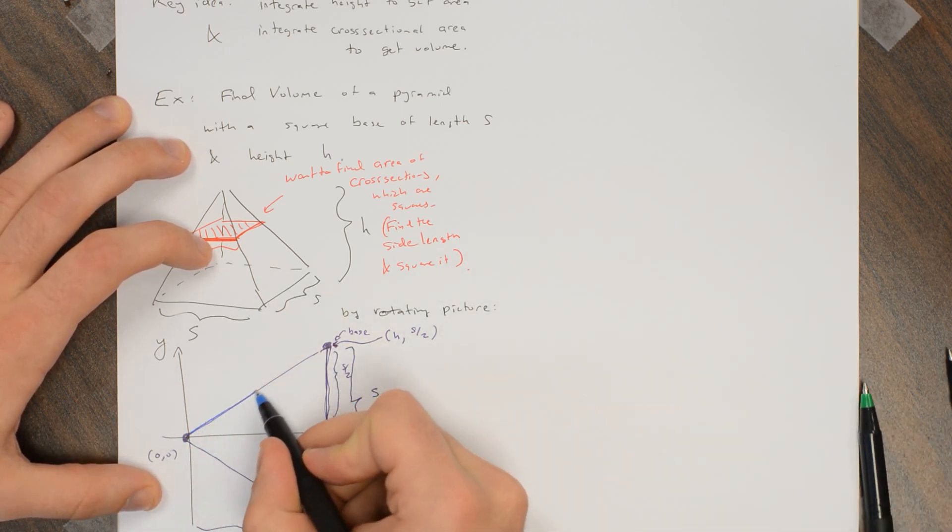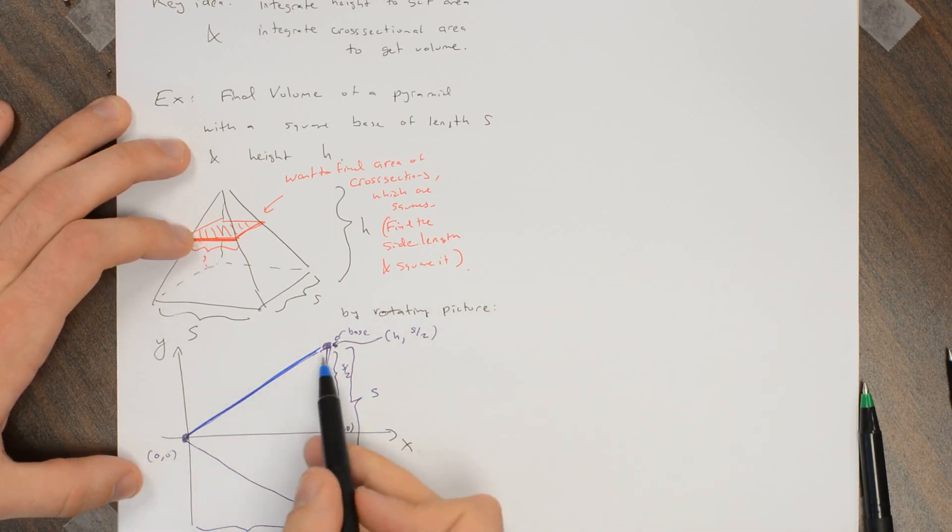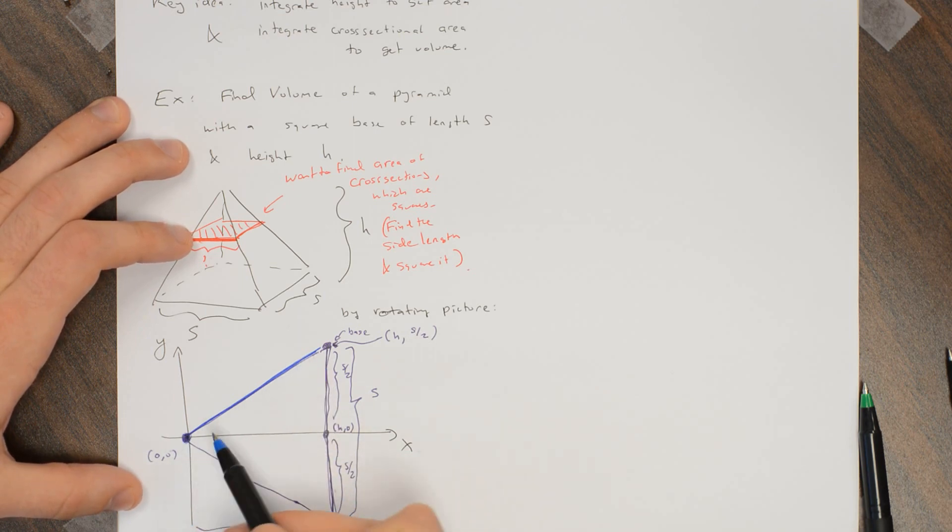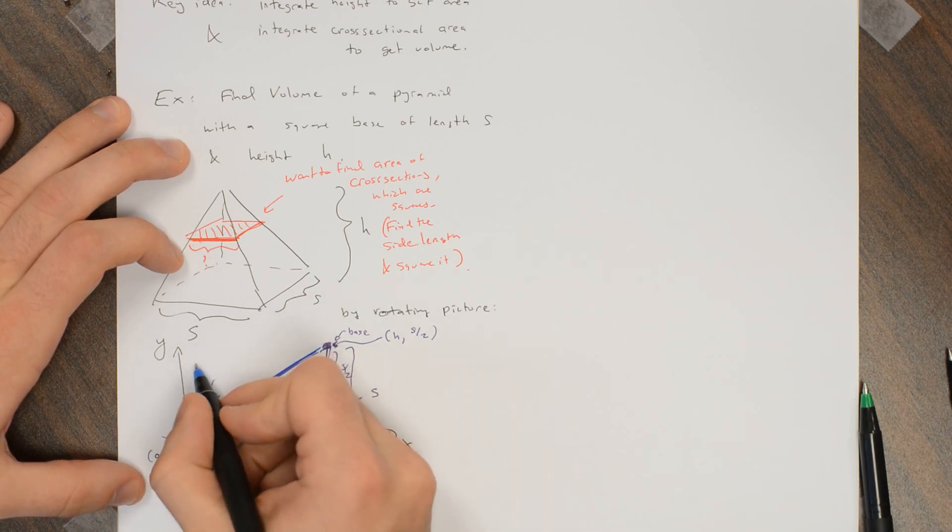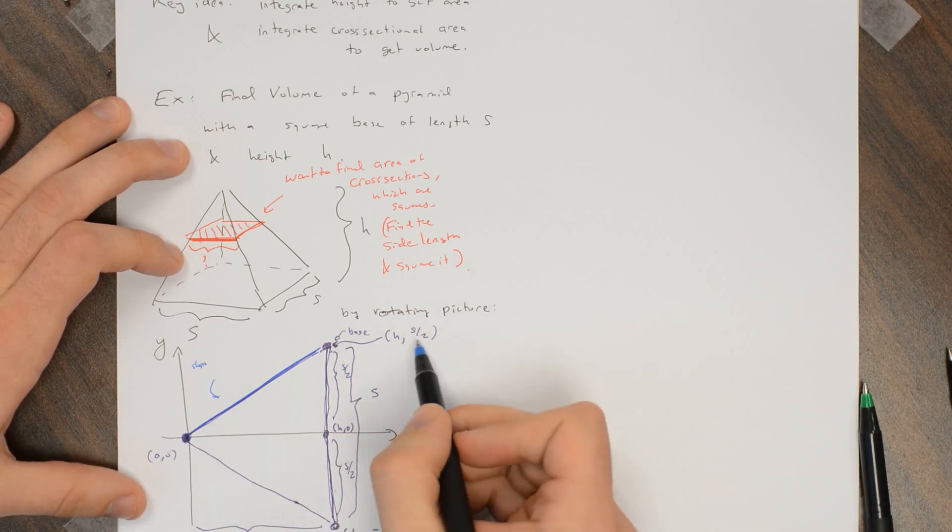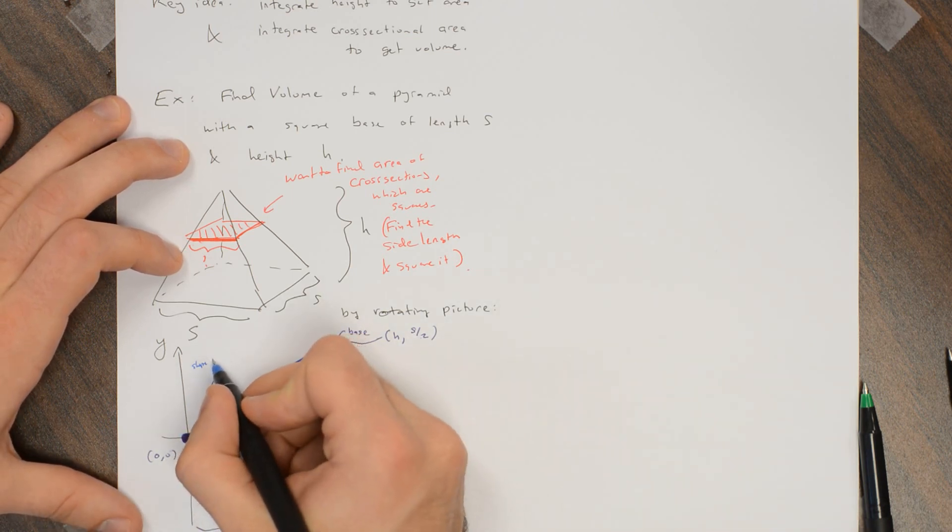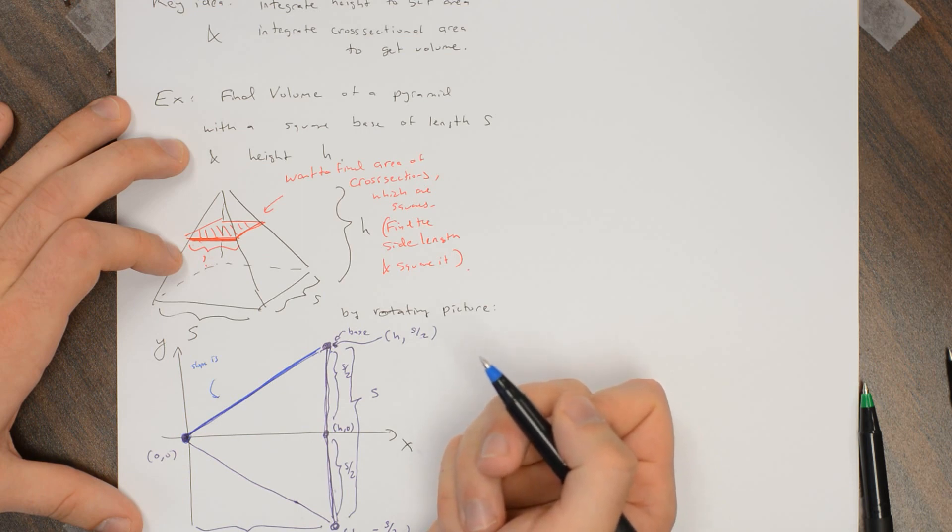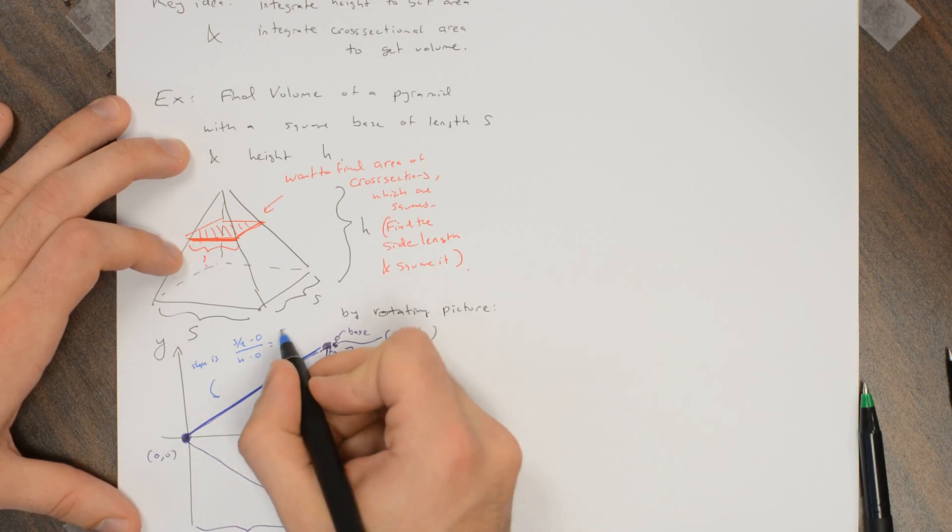And now I can find the equation of this line that we see. This is a line that goes through the origin, so it has y-intercept 0, and the slope is rise over run, so the slope is the change in y over the change in x, so s over 2 minus 0 over h minus 0, which is s over 2h.